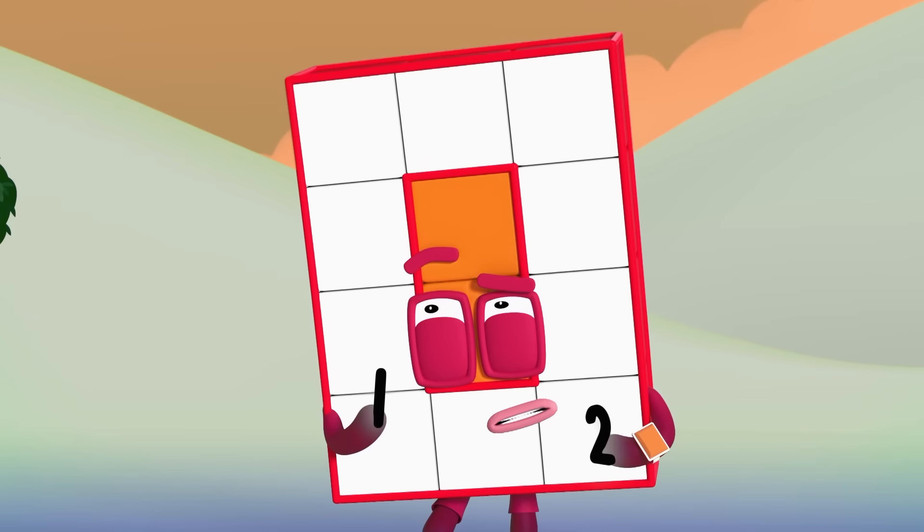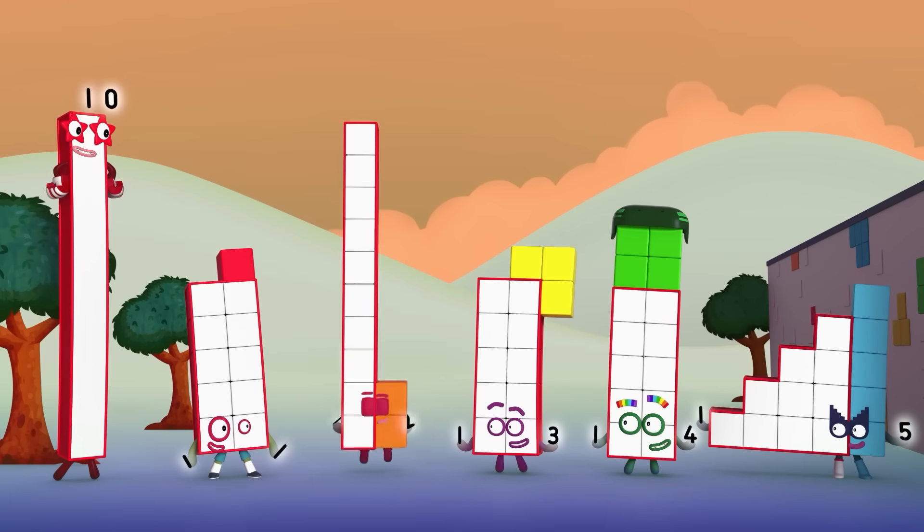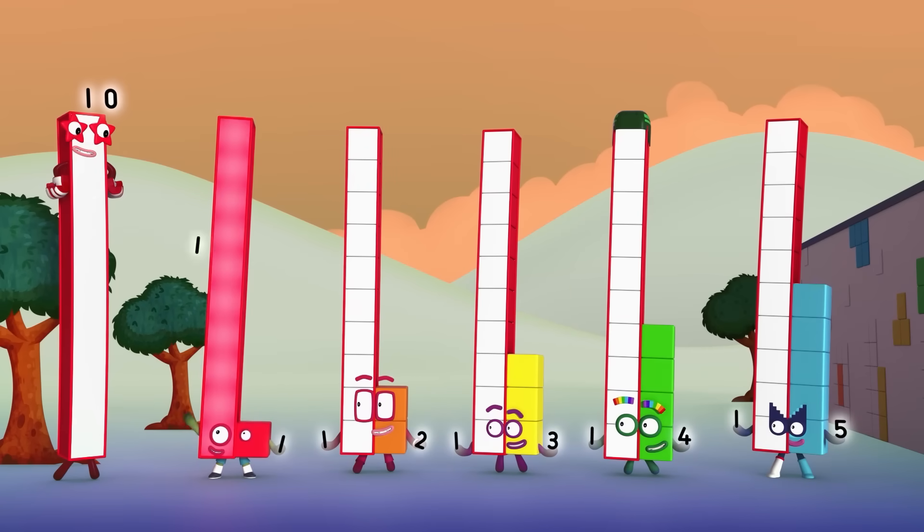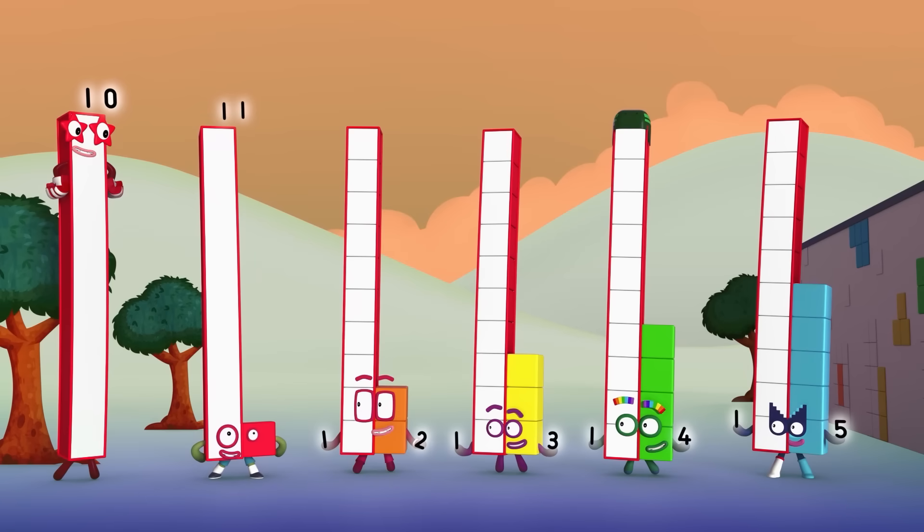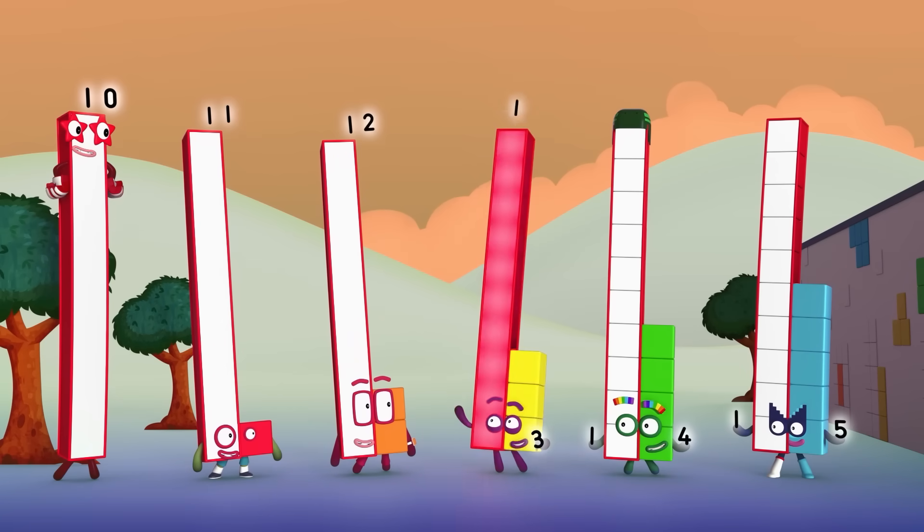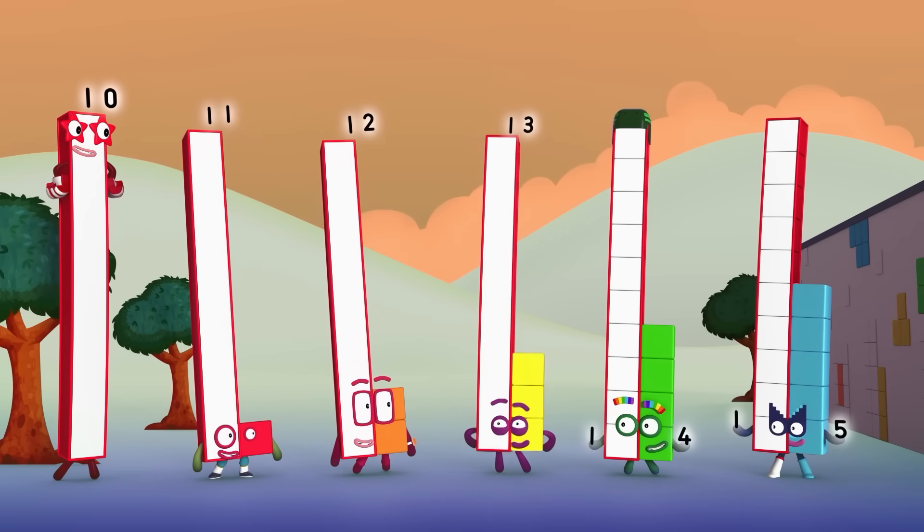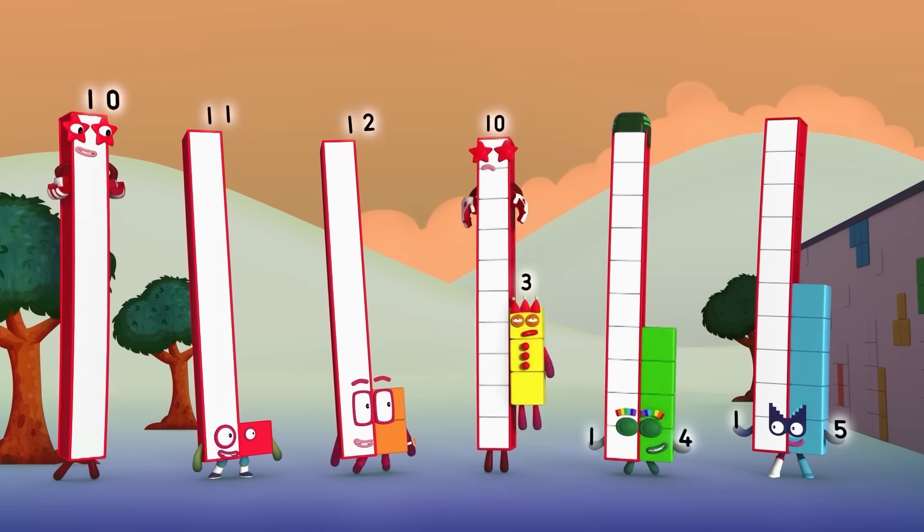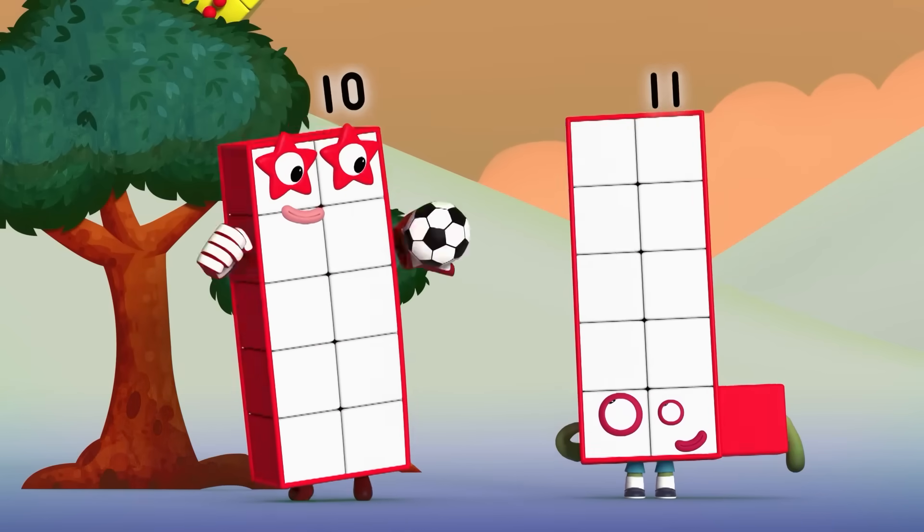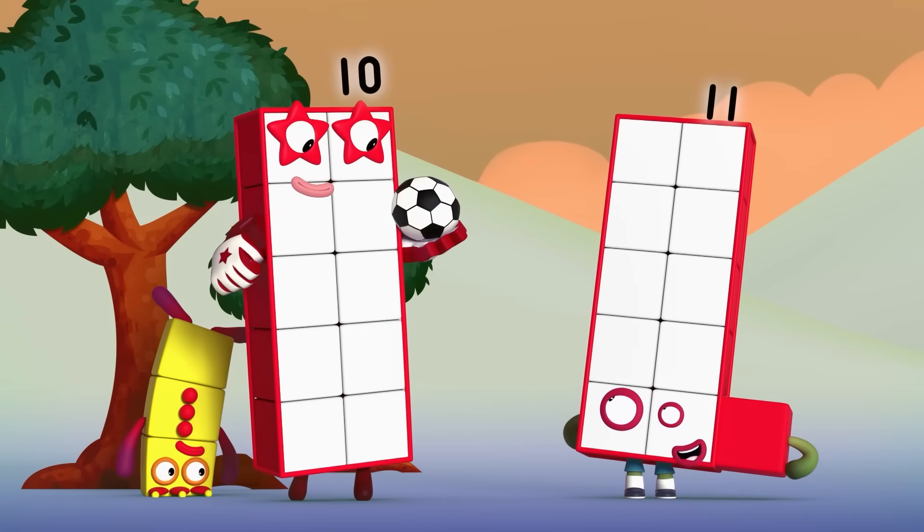So each of us needs two numberlings. One numberling for the big ten block and one for the rest. I'm one ten block and one block more. I'm eleven. I'm one ten block and two one blocks. I'm twelve. I'm one ten block and three one blocks. I'm thirteen. Whoa! Duck! Nice save, Ten. Thanks.